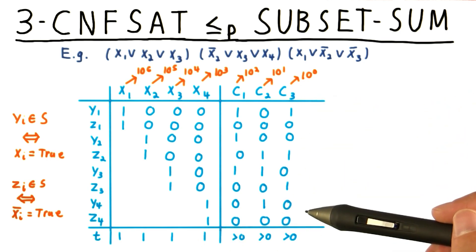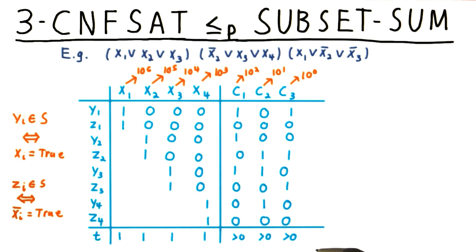For these clause columns, however, the total just has to be greater than 0. We just need one literal in the clause to be true in order for the clause to be satisfied. But that doesn't give me a specific k that we need to sum to.